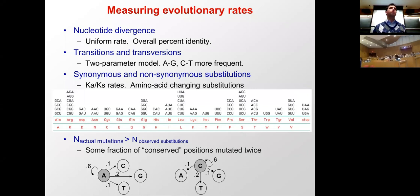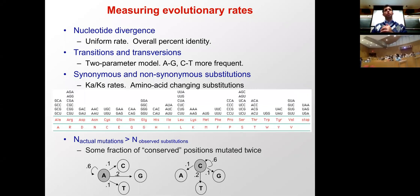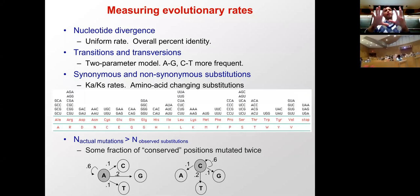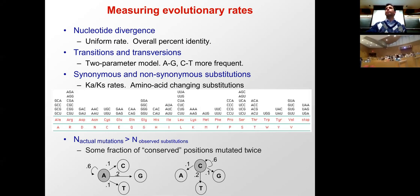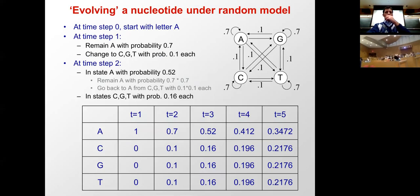The BLOSUM and PAM matrices already incorporated rates at which different amino acids change — pairs of amino acids substituted with each other. All of that fits into the framework we're covering today. Even though we focus on nucleotides, the exact same thing applies at the amino acid level.